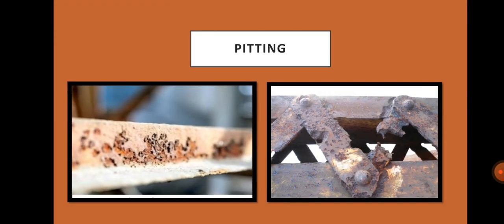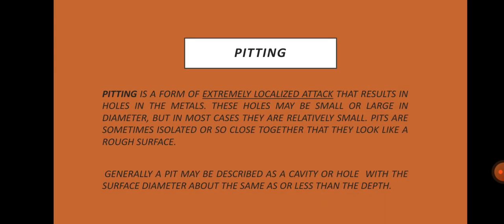Pitting: pitting is a form of extremely localized attack that results in holes in the metal. These holes may be small or large in diameter, but in most cases they are relatively small. Pits are sometimes isolated or so close together that they look like a rough surface. Generally, a pit may be described as a cavity or hole with the surface diameter about the same as or less than the depth. Pitting corrosion is considered more dangerous than uniform corrosion damage because it is harder to detect and predict. It is caused when non-metallic materials are present on the surface of the metal.